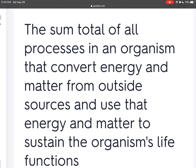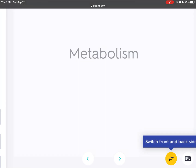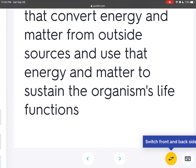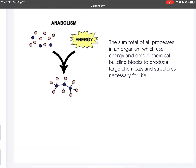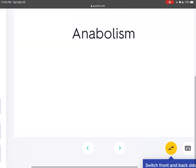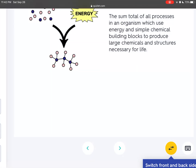The sum total of all processes in an organism that convert energy and matter from outside sources and use that energy and matter to sustain the organism's life functions is metabolism. The sum total of all processes in an organism which use energy and simple chemical building blocks to produce large chemicals and structures necessary for life is anabolism.